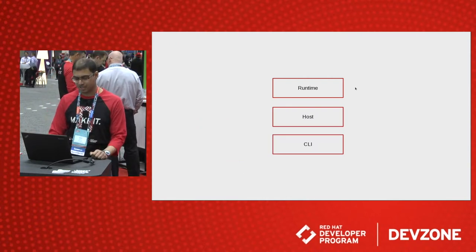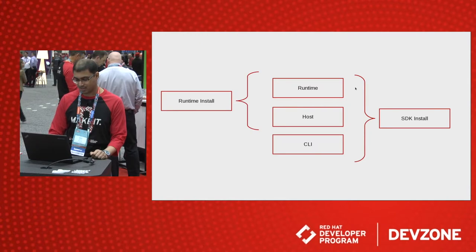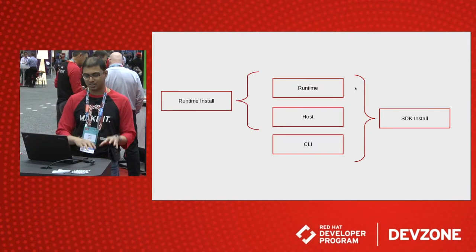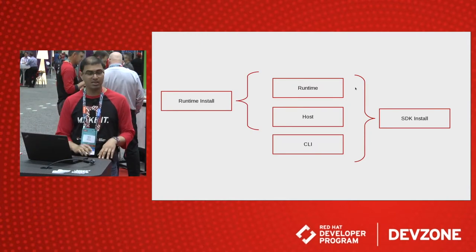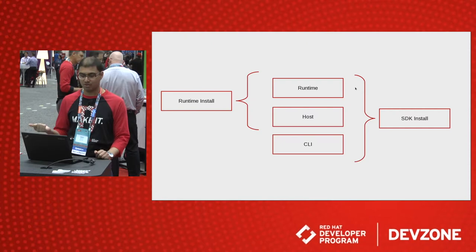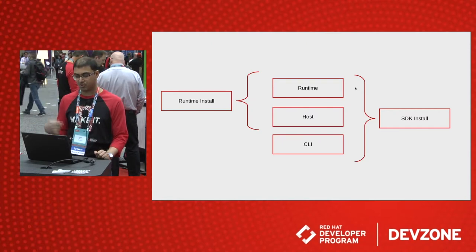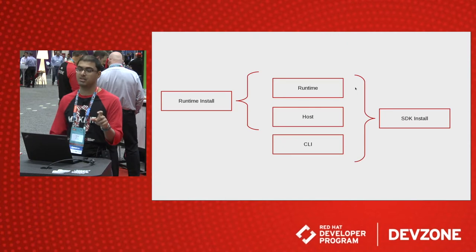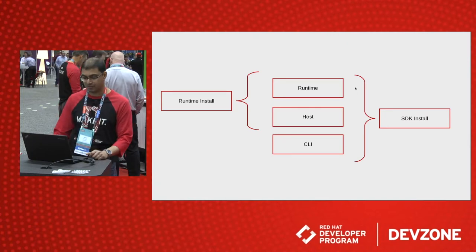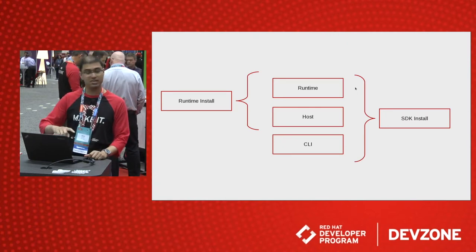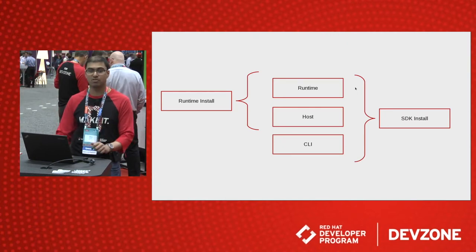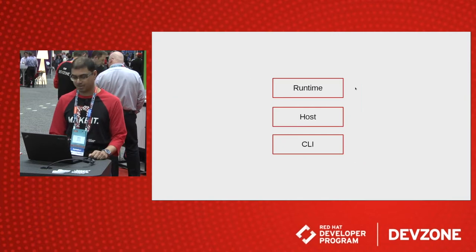So those are the three components. When you do an install, you either download the runtime environment or the SDK. If you get the runtime, you get the top two components. If you do the SDK, you get all three, with possibly multiple versions of the runtime.